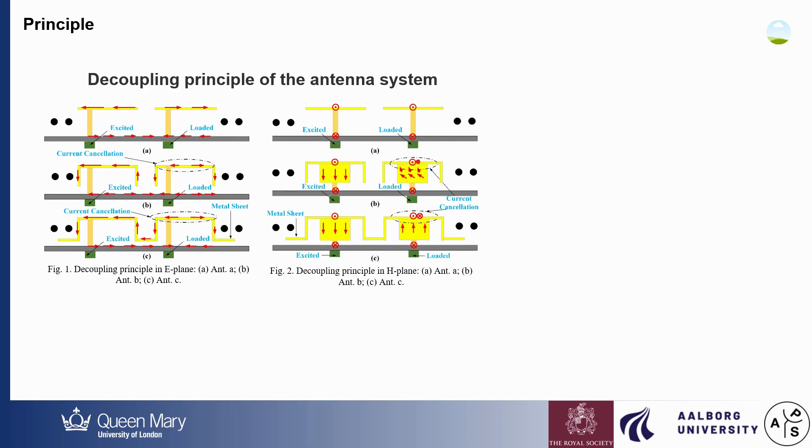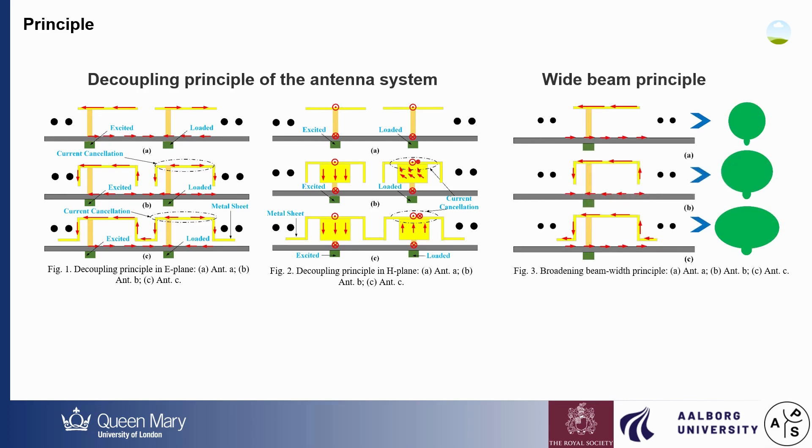As shown in Figure 2b, this method not only achieves the cancellation effect, but also improves the antenna radiation performance. As shown in Figure 3, the vertical current has the effect of radiation to both sides of the antenna, thereby improving the antenna radiation pattern.